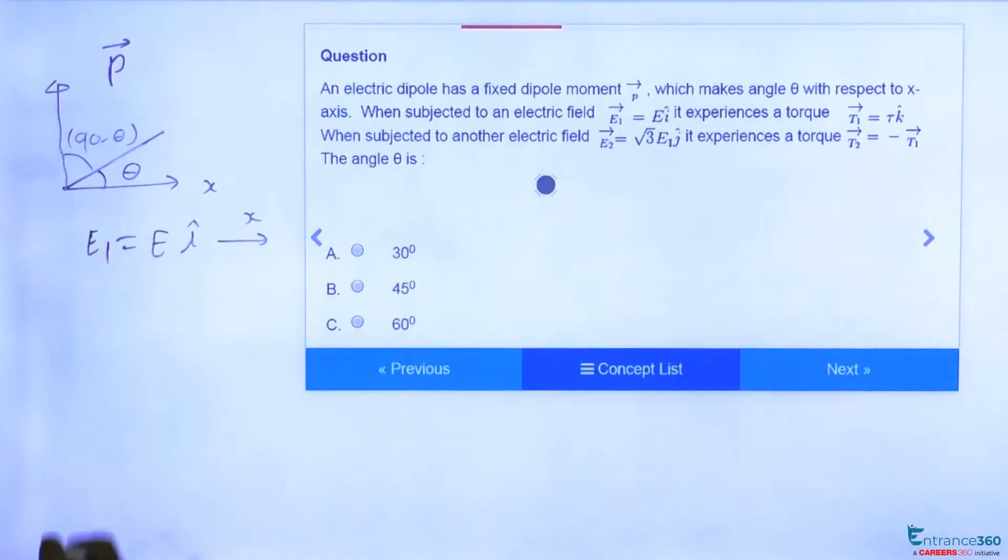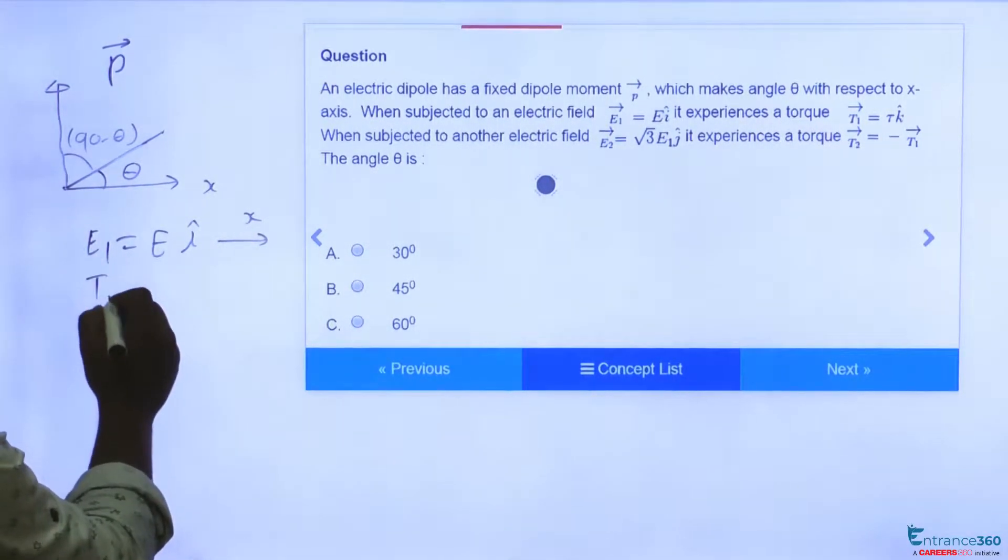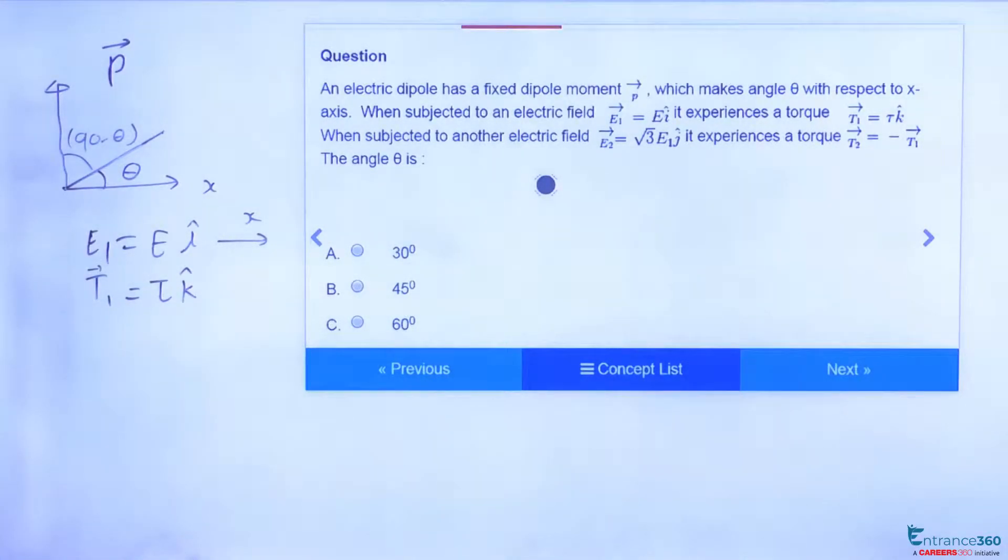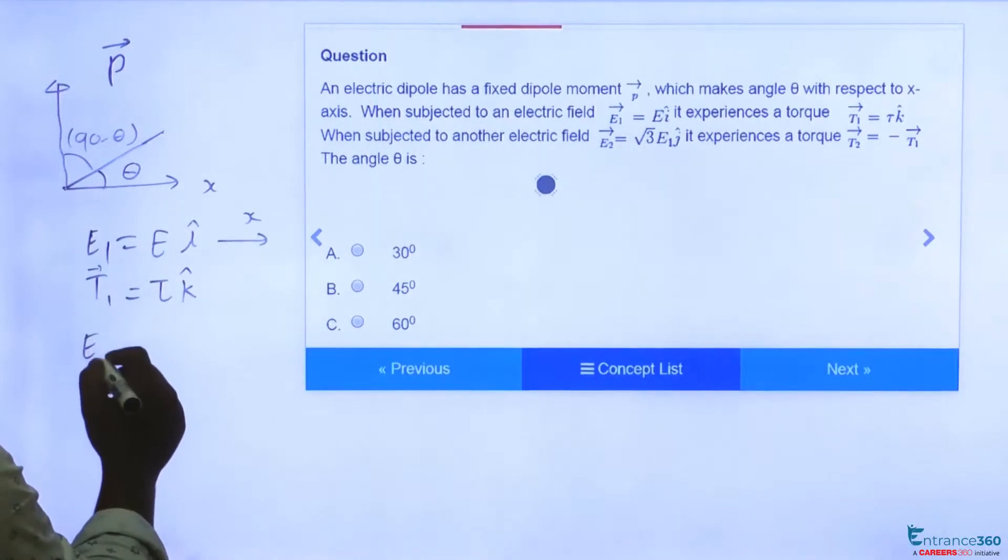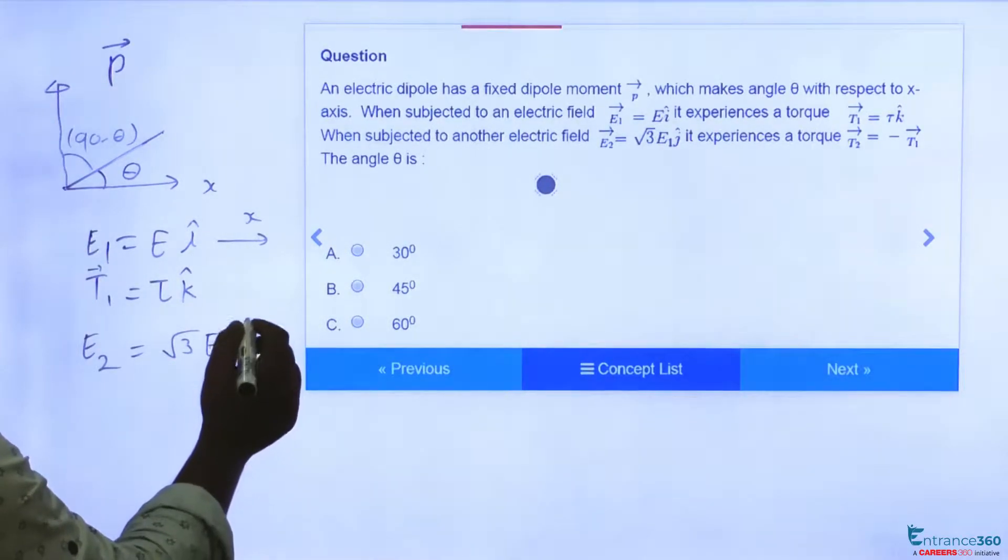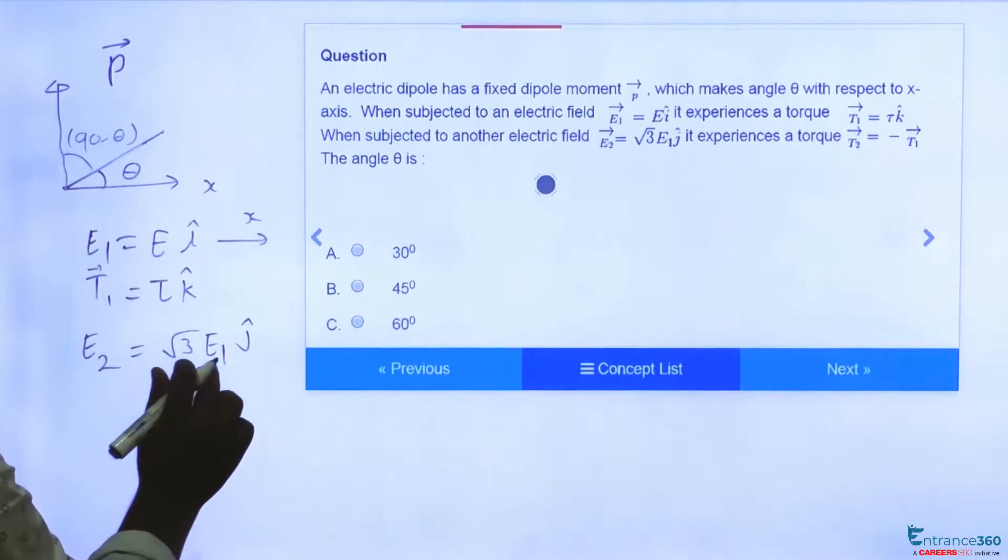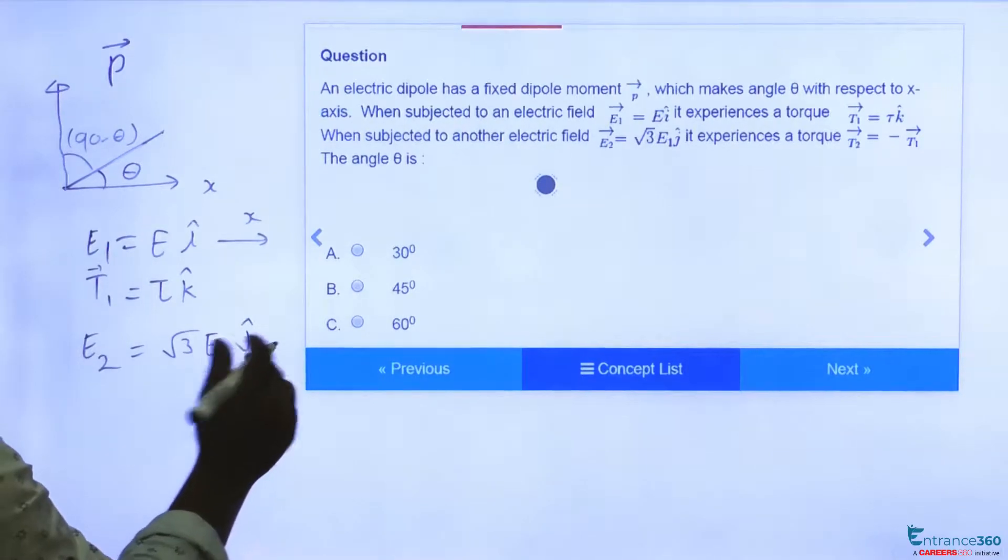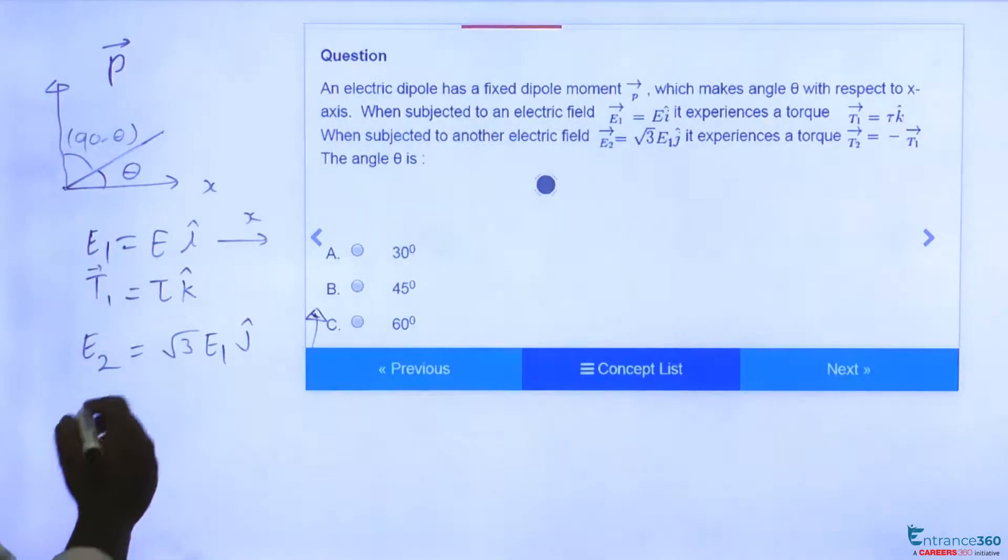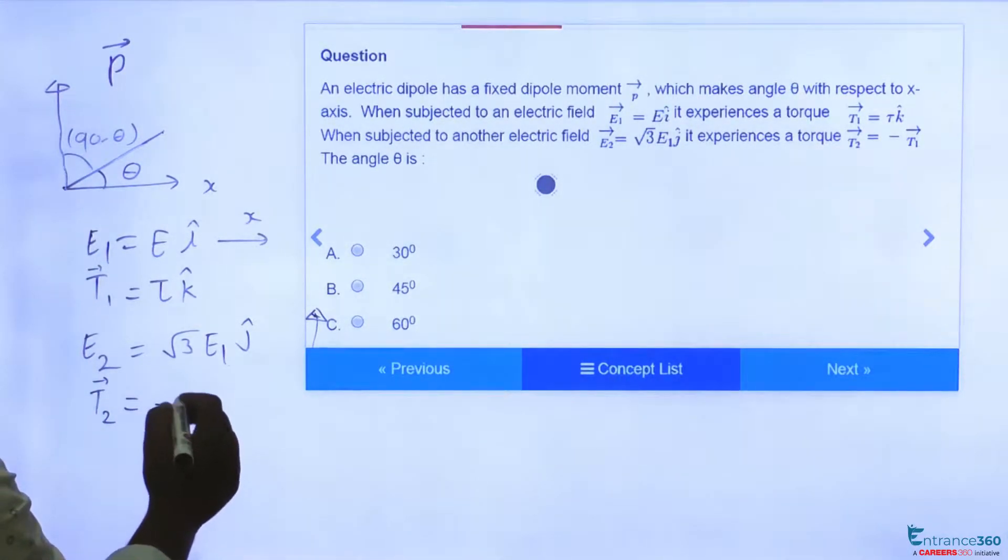In this period, then torque 1 is given as τ k cap. And in the second situation we have electric field which is E₂ equal to root 3 times E₁ j cap. Means magnitude is root 3 times E₁ and direction is in y direction. And the value of torque 2 which is τ₂ is minus τ₁.